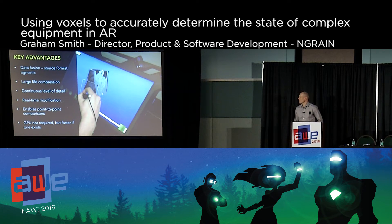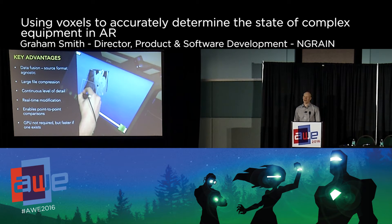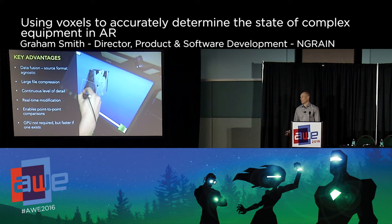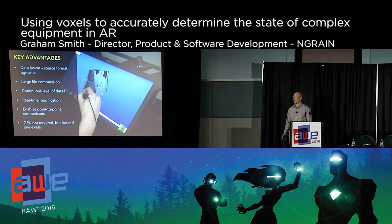Point-to-point comparisons — come to our booth and see some of those. Having two really large point cloud files and comparing them is something that is easily done with voxels. And our implementation is done totally in software if you want it to be. So if you don't have a GPU on your platform, you can still take advantage of voxels. Yet if you do have a GPU, we also take advantage of that.